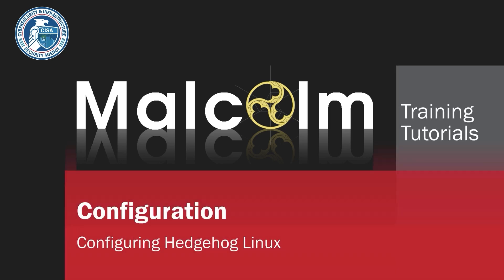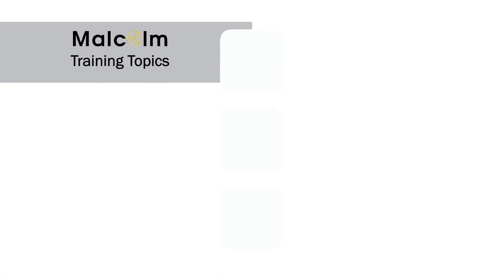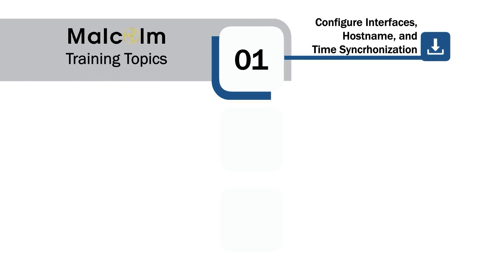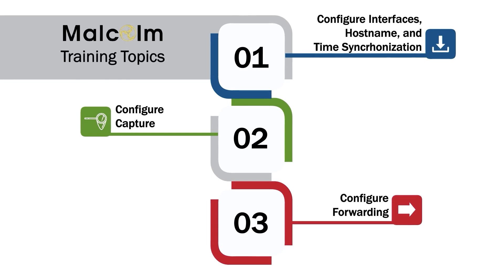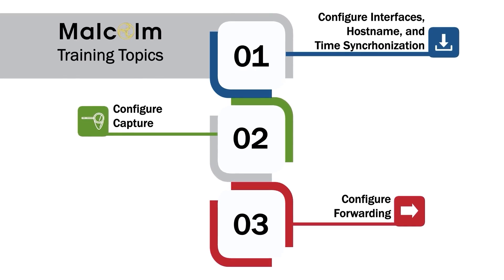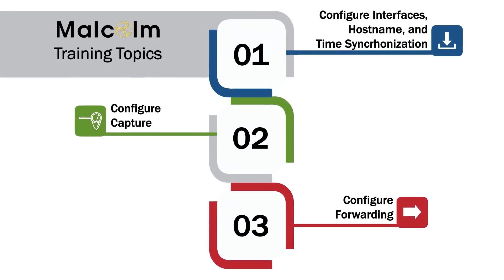Malcolm Training Tutorials: Configuration — Hedgehog Linux. In the previous video, you learned how to install Hedgehog Linux. In this video, we will walk you through configuring interfaces, hostname and time synchronization, configuring capture, and configuring forwarding. This will help your sensors to start capturing network traffic and forwarding metadata about that traffic to a Malcolm server.